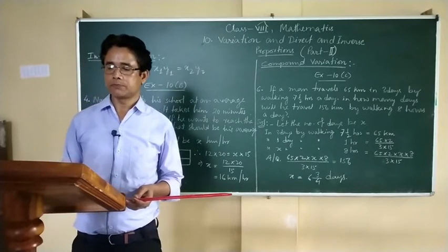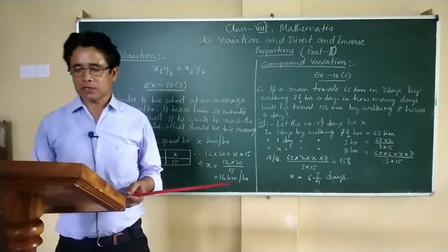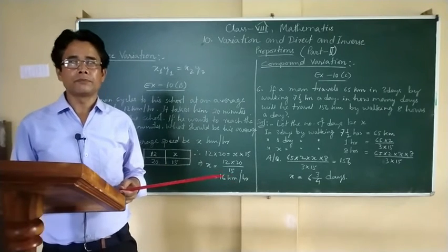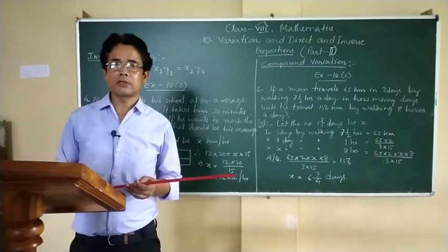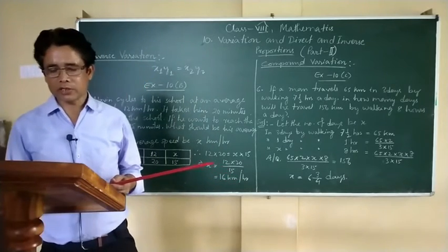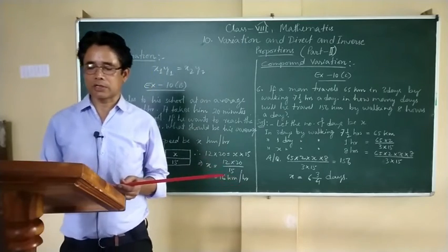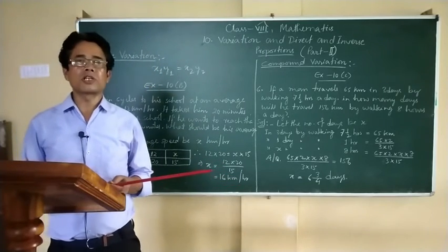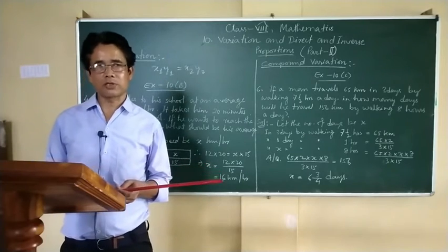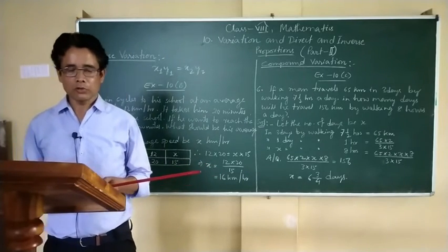Two quantities X and Y are said to vary indirectly or inversely if the product XY remains constant, which is called K. K is called the constant of variation and it is always positive.